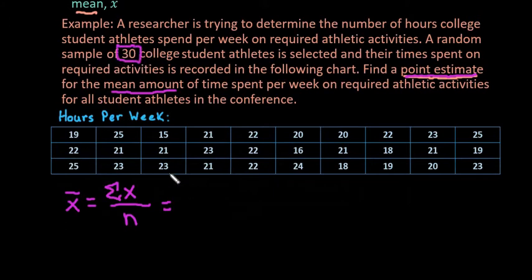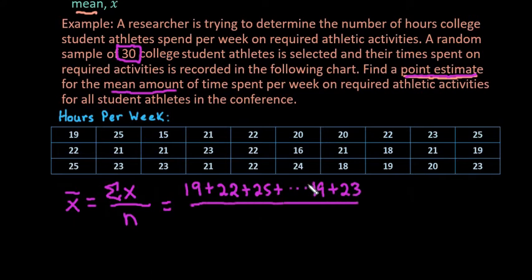So we would just add up all these values. If you wanted to do this by hand you would just do 19 plus 22 plus 25, you would keep adding all the way till you got to the end, 19 plus 23. Using the ellipsis allows you to show work without actually having to write out all 30 values. And then we would just divide by 30.